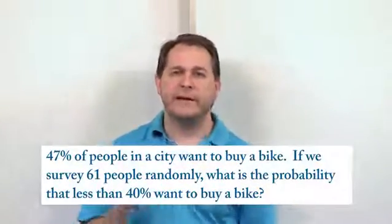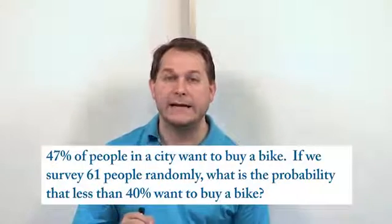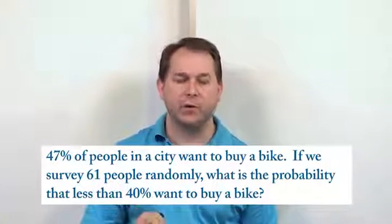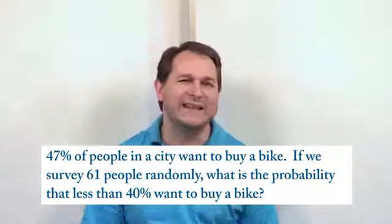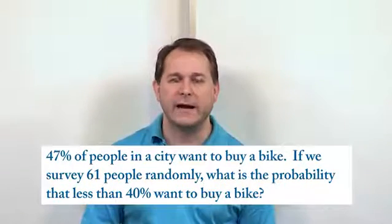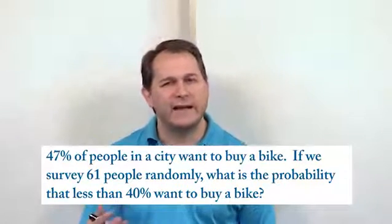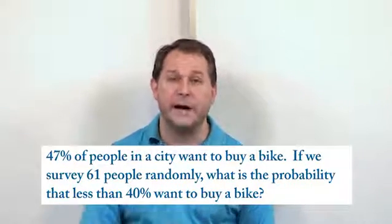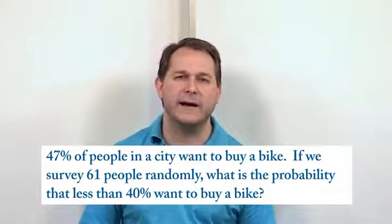47% of people in a city want to buy a bike. If we survey 61 people at random, what is the probability that less than 40% of those people want to buy a bike? This is the kind of common thing that you'll see. First we're given information about the population — we're told that 47% of people in the city want to buy a bike.